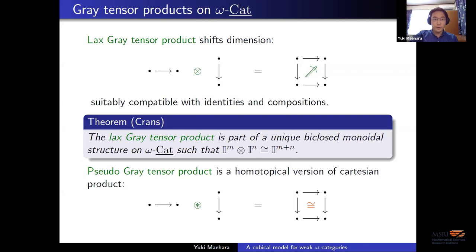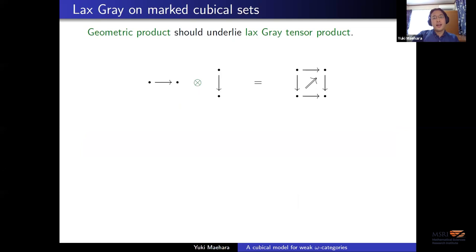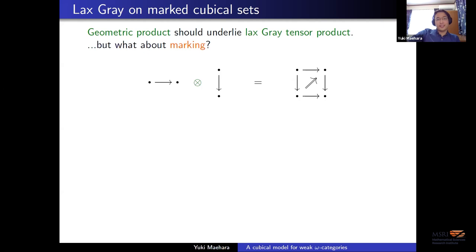So why did I start talking about these tensor products? The point was that we developed this cubical model for weak omega categories so that hopefully these Gray tensor products are easier to deal with. Let's actually define these Gray tensor products on marked cubical sets. The whole point of using cubical sets is so that we have access to geometric products. Basically on the underlying cubical set level, if you tensor one cube with one cube, then you get a two cube. But what about marking?